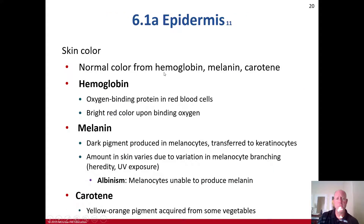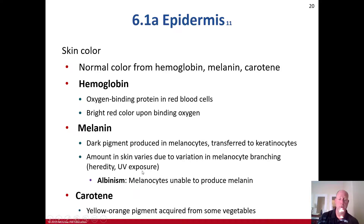Skin color comes from three sources: hemoglobin, melanin, and carotene. Hemoglobin is the oxygen-binding protein in red blood cells — it's bright red upon binding with oxygen. Melanin is a dark pigment produced in melanocytes and transferred to keratinocytes. The variation in skin color depends on the variation in melanocyte branching, not the number of melanocytes — generally, people have the same number of melanocytes. Differences are based on heredity and ultraviolet exposure, giving darker or lighter skin. Albinism occurs when melanocytes are unable to produce melanin, having the same number of melanocytes but not producing the same amount. Carotene is a yellow-orange pigment acquired from some vegetables that plays a role in skin health.